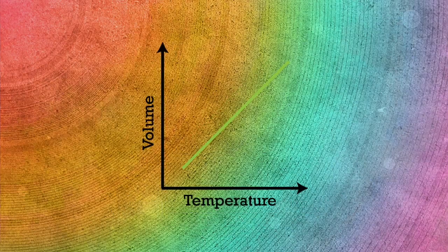Volume is the space particles exist inside of, and temperature is how fast molecules are moving inside the given space. Volume is measured in liters, and temperature is measured in Kelvin. The constant is something that stays the same and depends on number of moles and pressure.